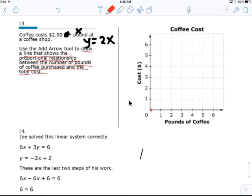It starts at $0. If you didn't buy any coffee, it costs you nothing. If you bought 1 pound, it costs you $2. Up 2 over 1. If I buy 2 pounds, it costs you $4. Up 2 over 1. Up 2 over 1 each time.